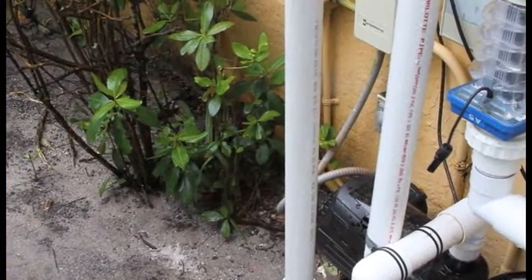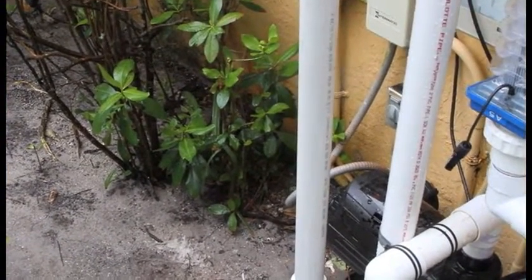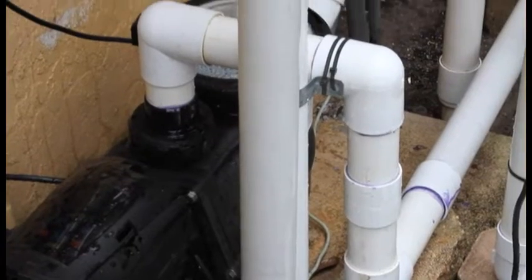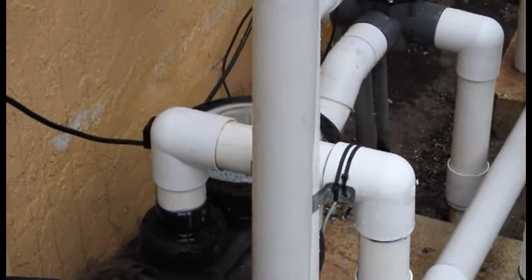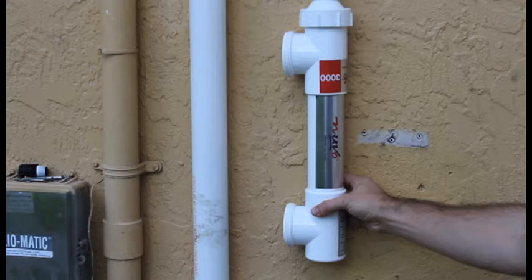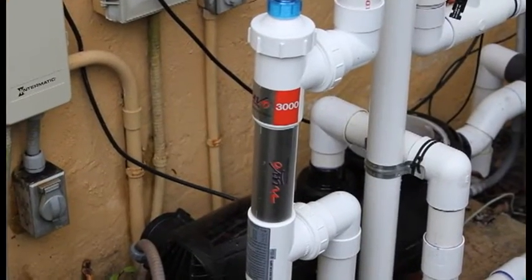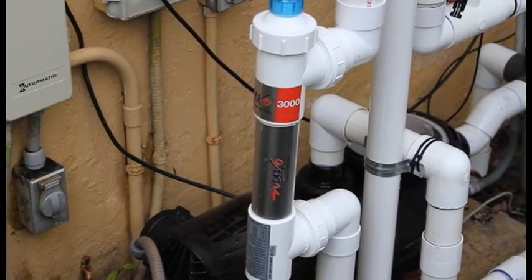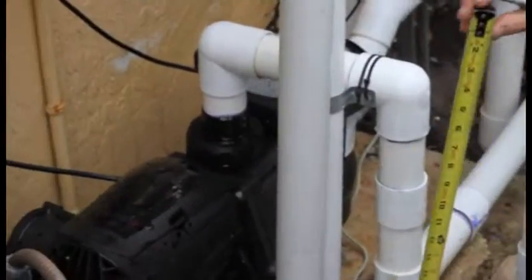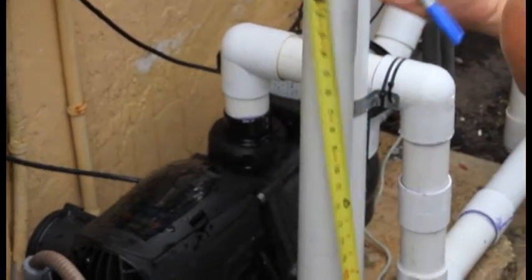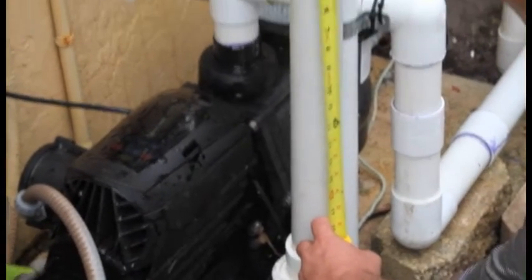Locate an area of plumbing after the filter on the return side that has a pipe in a straight line of 18 inches or more. It's best to install the Nuvo after the filter so that clean water will keep the quartz sleeve clean. Measure a 15 inch long segment of pipe then mark it as shown.